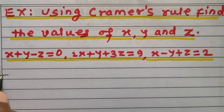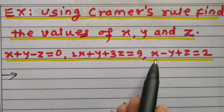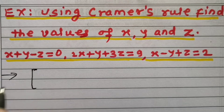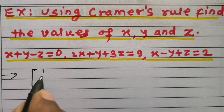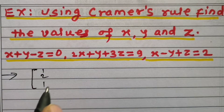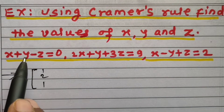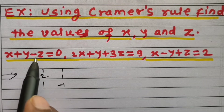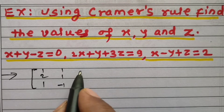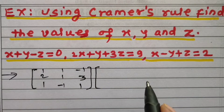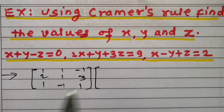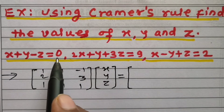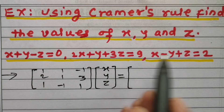Let us solve this sum. First of all, try to get the given equations in matrix form. So, first column of coefficients of x: 1, 2, 1. Second column coefficients of y: 1, 1, minus 1. And third column coefficients of z: minus 1, plus 3, plus 1. And column matrix of variables x, y, and z is equal to the column matrix of constants appearing on the right hand side: 0, 9, 2.